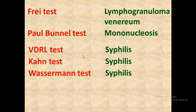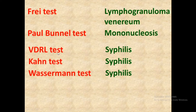Three different tests are used for the diagnosis of syphilis. First is the VDRL test, second is the Kahn test, and third is the Wassermann test. You can remember these using the mnemonic VKW: V indicates VDRL test, K indicates Kahn test, and W indicates Wassermann test. So VKW equals syphilis.